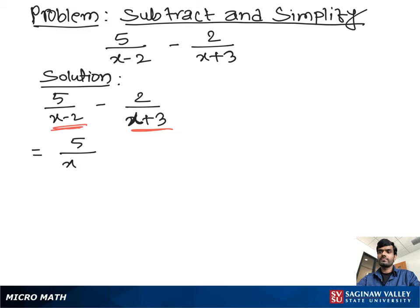So we multiply the first term's both numerator and denominator with x plus 3, then we multiply the second term's both numerator and denominator with x minus 2 to make each term's denominator the same.